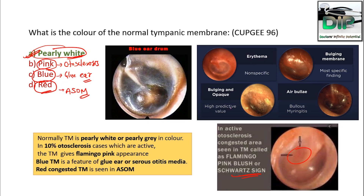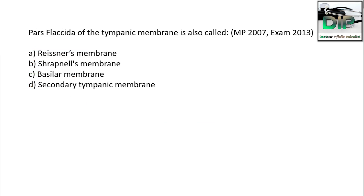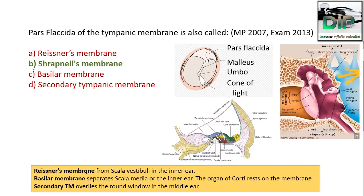Erythema of the tympanic membrane is non-specific, but a bulging membrane is specific for acute otitis media. Next question: The pars flaccida of the tympanic membrane is also called — options: A) Reissner's membrane, B) Shrapnell's membrane, C) Basilar membrane, D) Secondary tympanic membrane. The correct answer is Shrapnell's membrane.